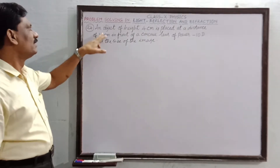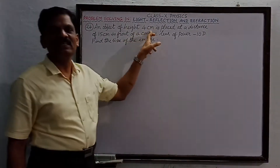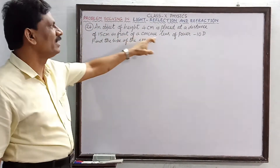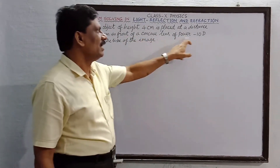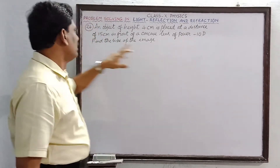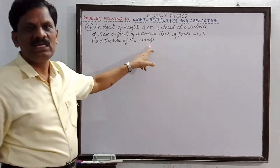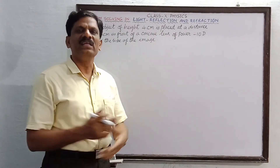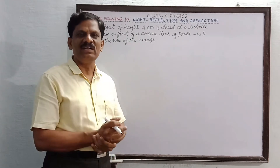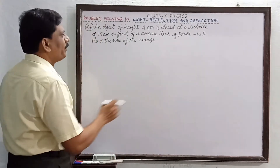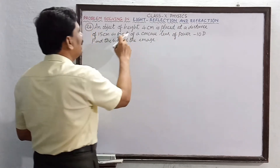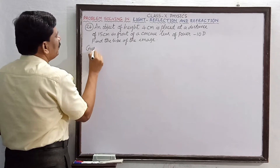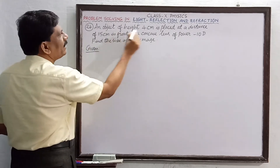Problem number 24: An object of height 4 centimeter is placed at a distance of 15 centimeter in front of a concave lens of power minus 10 diopter. Find the size of the image. This time power is given. The power of any lens is the reciprocal of the focal length. The power is negative because it is a concave lens.